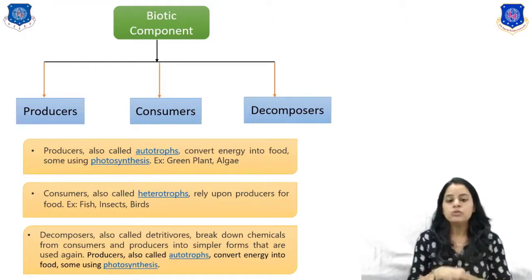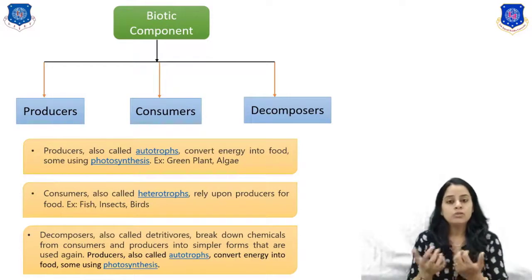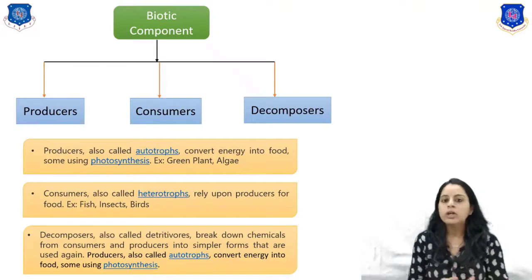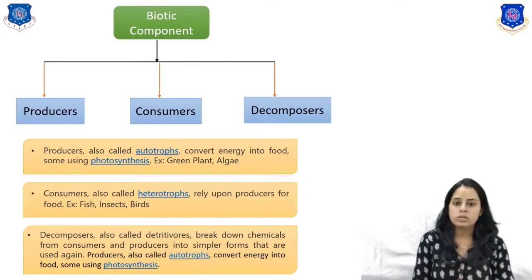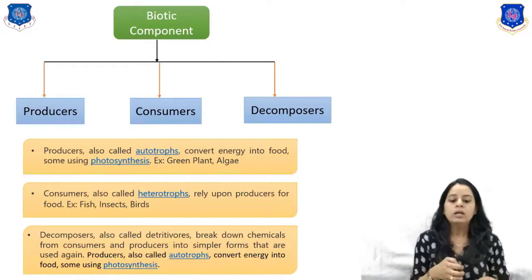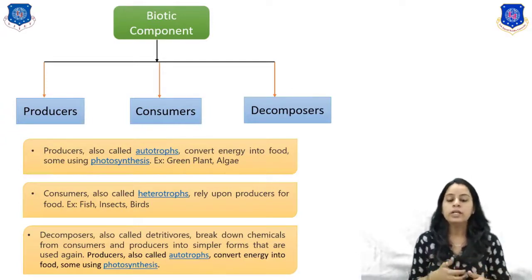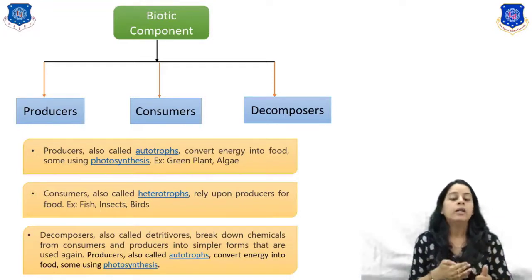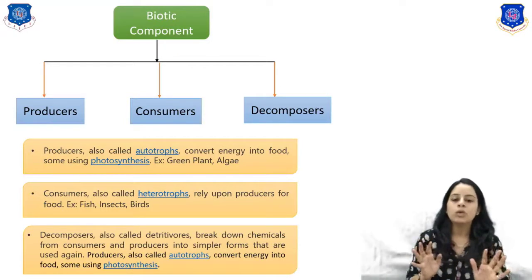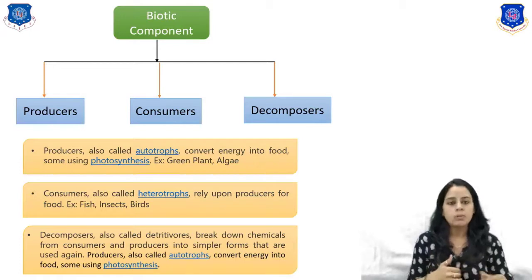Consumers are called heterotrophs, meaning they depend upon producers for food and continue the food chain. Decomposers break down chemical compounds from consumers and producers into simple forms, which are then used again. This is the cycle of producers, consumers, and decomposers.